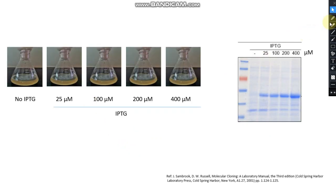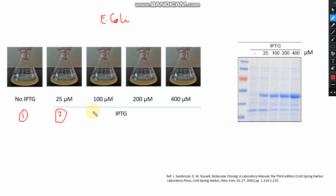In this experiment, five different bacterial flasks were used for bacterial culture using E. coli. In the first flask, no IPTG was added. In the other four flasks, 25, 100, 200, and 400 micromolar IPTG were added respectively. After that, the cultures were incubated at 37 degrees Celsius with shaking at 150 rpm.